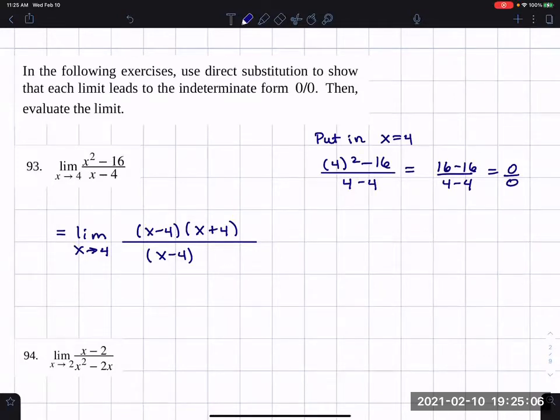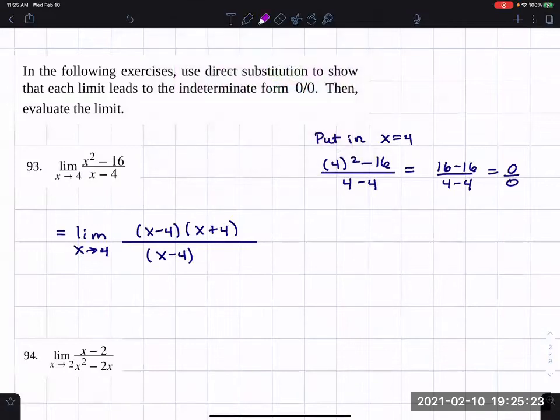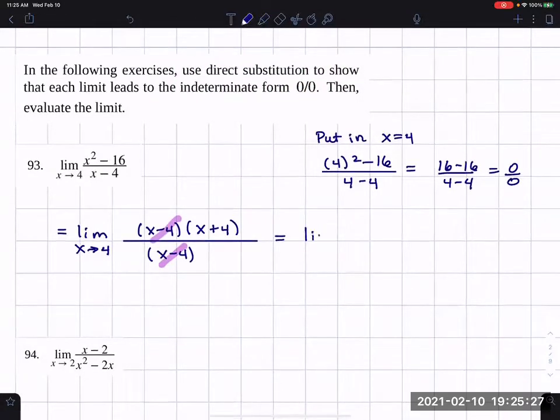So because four, when I put it into x squared minus 16, is equal to zero, because of that, that means x minus four is a factor and that makes it - I think it makes it a lot easier to do the factorization. And here we go. And once we've done that canceling, we can directly substitute in for x.